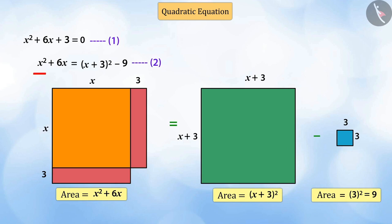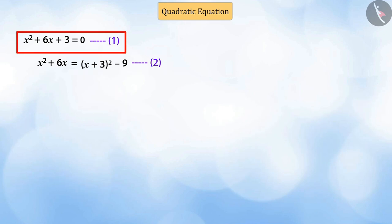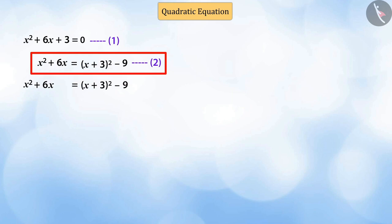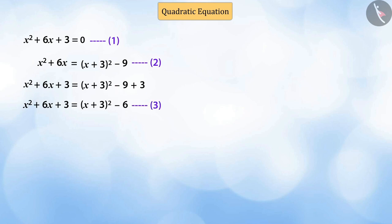On comparing the given equation to the quadratic equation x square plus 6x plus 3 equals to 0, we see that there is a shortage of plus 3 in equation 2. Hence, adding 3 to both sides of equation 2, the given equation can be written as a complete square as x plus 3, the whole square, minus 6 equals to 0.